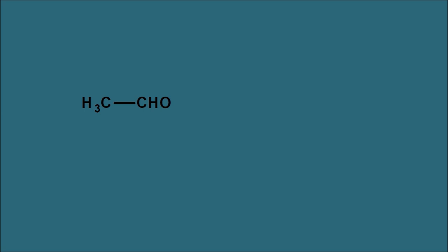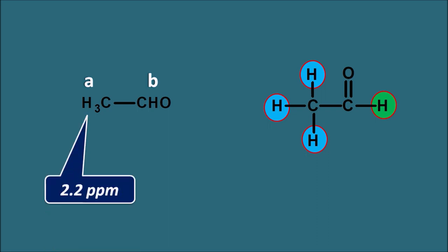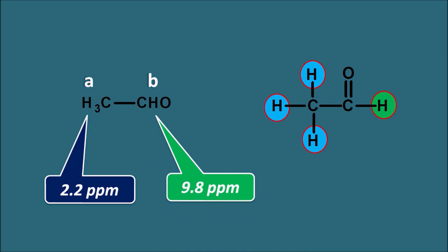Now let us take acetaldehyde as another example. Expanding the structure, the hydrogens attached to the methyl carbon give one type of peak, and the hydrogen attached to the carbonyl group gives another type of peak. So acetaldehyde gives two types of peaks: methyl protons at approximately 2.2 ppm and the aldehyde proton at 9.8 ppm.